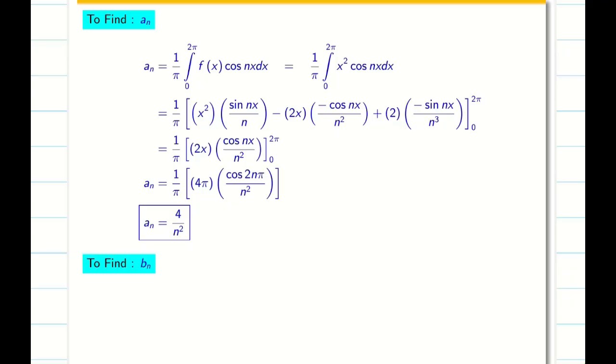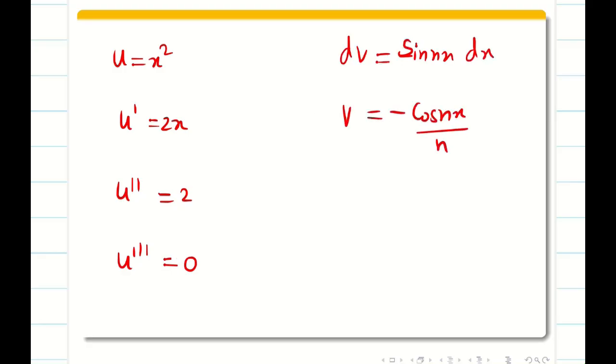Next we have to find b n. Similarly I will write 1 by π integral 0 to 2π f of x sin nx. That is 1 by π integral 0 to 2π x square into sin nx. Now we have to use the same Bernoulli's formula. u is equal to x square, u dash is equal to 2x, u double dash is equal to 2, triple dash is 0. dv is equal to sin nx dx, v is minus cos nx by n, v1 is minus sin nx by n square, and v2 is minus into minus plus cos nx by n cube. Now again we have to map uv, u dash v1, u double dash v2, substitute in the Bernoulli's formula.